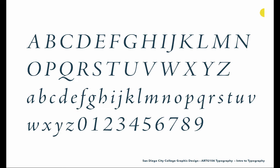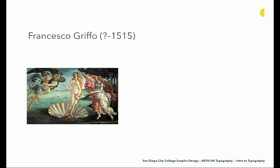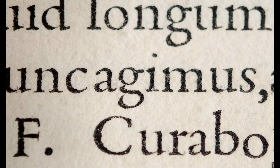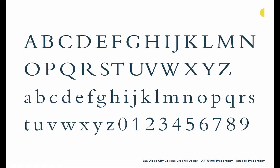Then we get to Francesco Griffo, who worked very closely with Aldus Manutius to create a series of gorgeous typefaces. He worked in Roman and italic and was really known for the refinement he brought to his craft. Here's an example of a modern revival of Bembo, which is really based on Francesco Griffo's work.